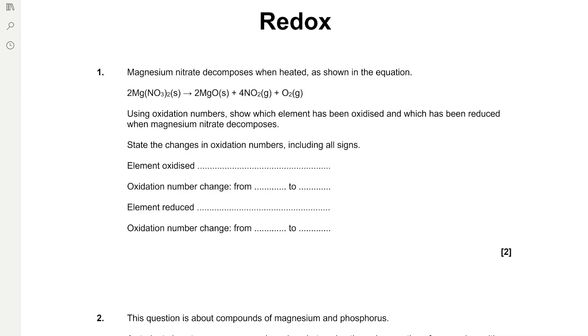Question 1: Magnesium nitrate decomposes when heated as shown in the equation. You can see that 2Mg(NO3)2 is going to 2MgO + 4NO2 + O2. Using oxidation numbers, show which element has been oxidised and which has been reduced when magnesium nitrate decomposes, and state the change in oxidation numbers including all signs. So if we write the equation down here, it will make it easier for us to assess the change in oxidation numbers.